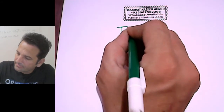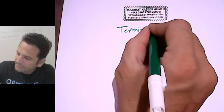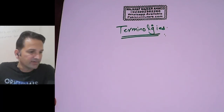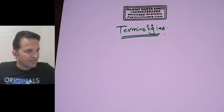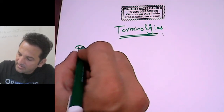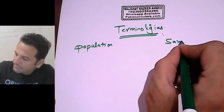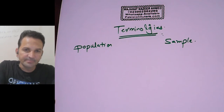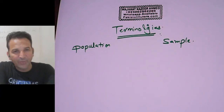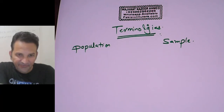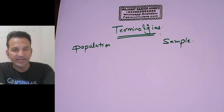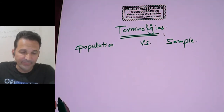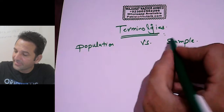Now we look at some key terminologies. To understand the subject of statistics, we have to understand some important concepts. First of all, we have to understand the difference between population and sample. Population refers to the whole population — for example, the world's population. From that population, if you are interested in any part of the world, any particular city, or any particular organization, that will be treated as a sample. Population refers to the whole, and sample is a part of population.